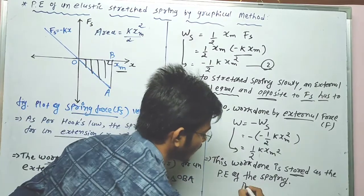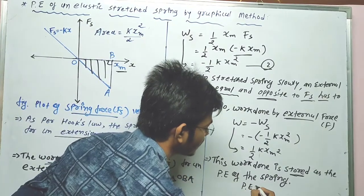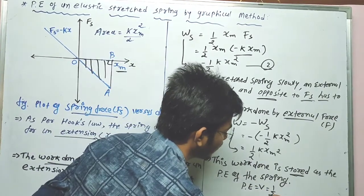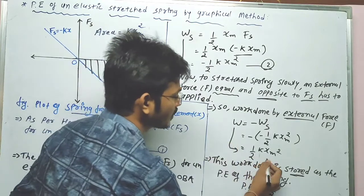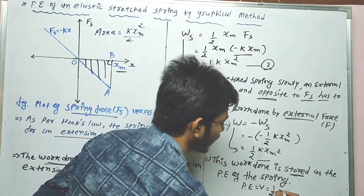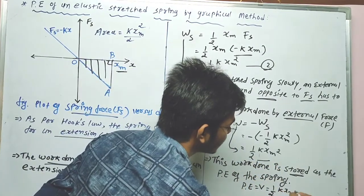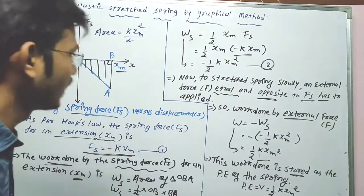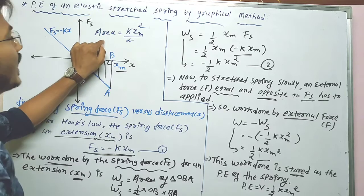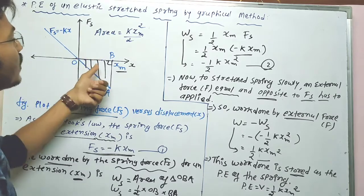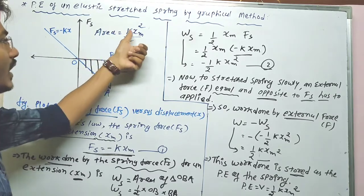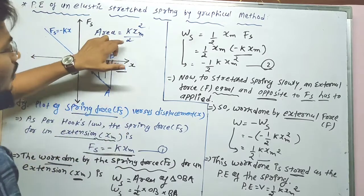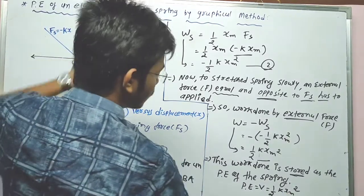So the potential energy, derived using the graphical method, is equal to one-half k xm squared. The area under the graph equals k xm squared divided by two, and finalizing, the potential energy of a stretched spring is equal to one-half k xm squared.